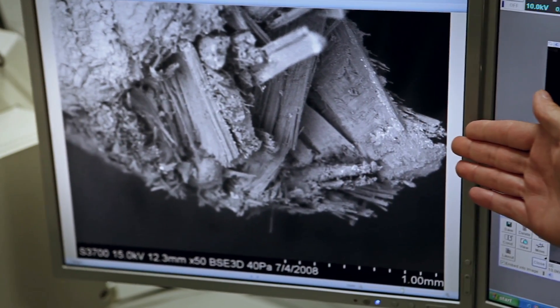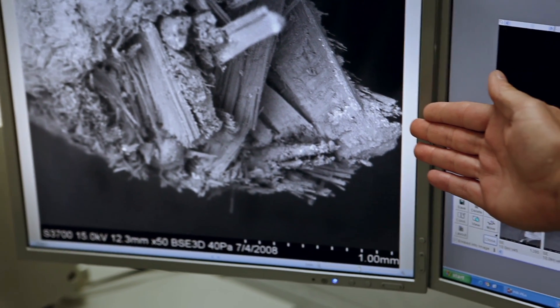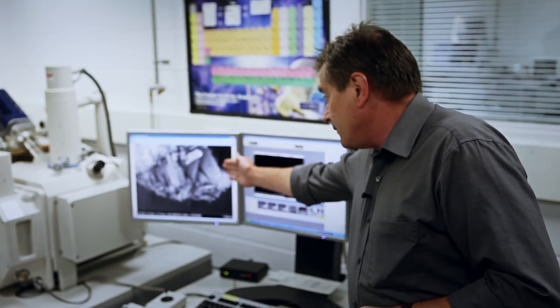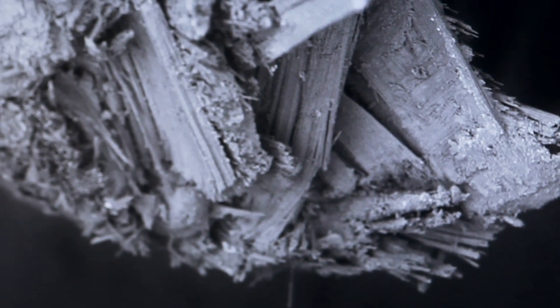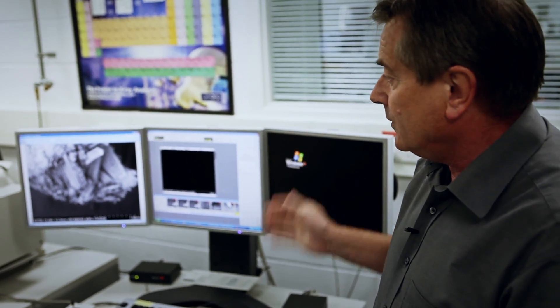On the screen at the moment you can see a carbon component that failed in the lab on a machine and that's just 50 times magnification. We can go up to 300,000.